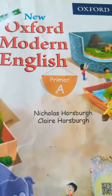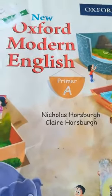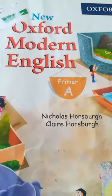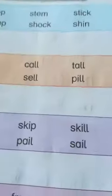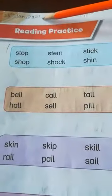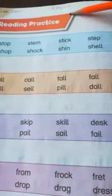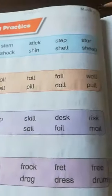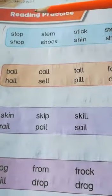Bismillah wa rahman wa rahim. Assalamu alaikum. Dear students, all of you open your New Oxford Modern English Primary textbook, page number 40. First of all, write today's date here. The date is 25th January 2021. Subject is English and the day is Monday. Today our topic is reading practice.